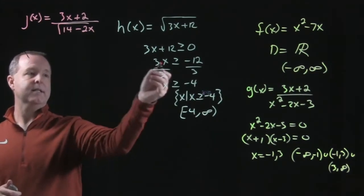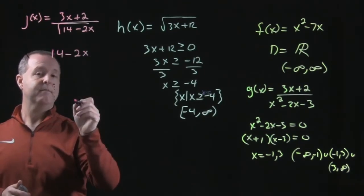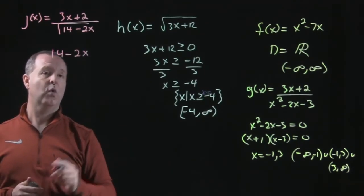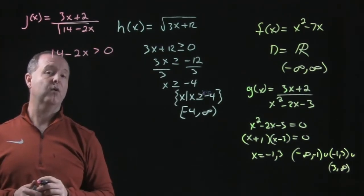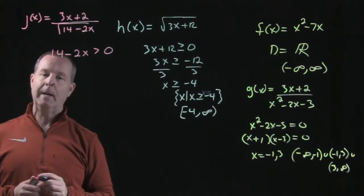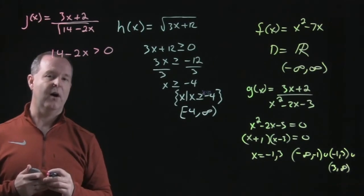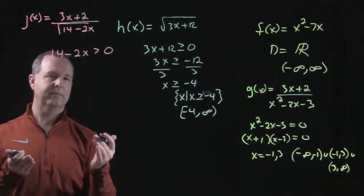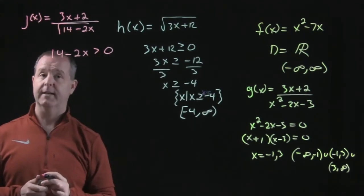So 14 - 2x, similar to this idea, 14 - 2x, I have to make sure that's greater than or equal to zero. Now notice I said greater than or equal to zero for the root to be positive. But there was something else going on. I have to make sure that it also does not equal zero. So I remove the greater than or equal to zero and it's just greater than zero.